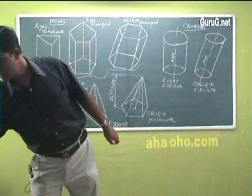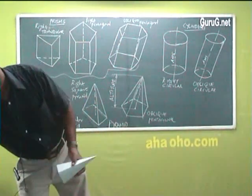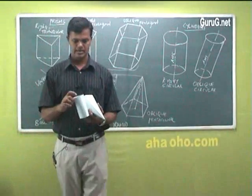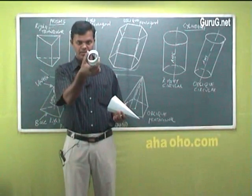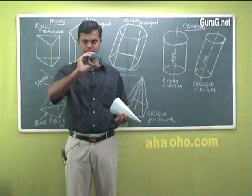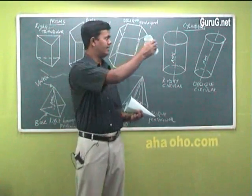Now, this is a cylinder. You can see you have a round shape here and the back side is also round. This becomes a cylinder.